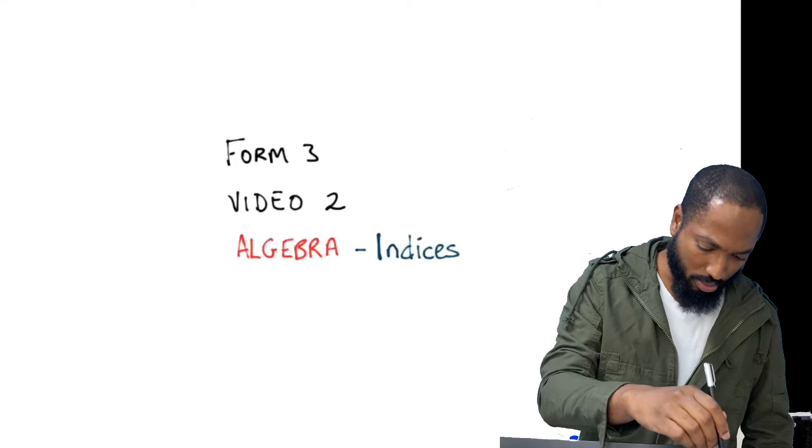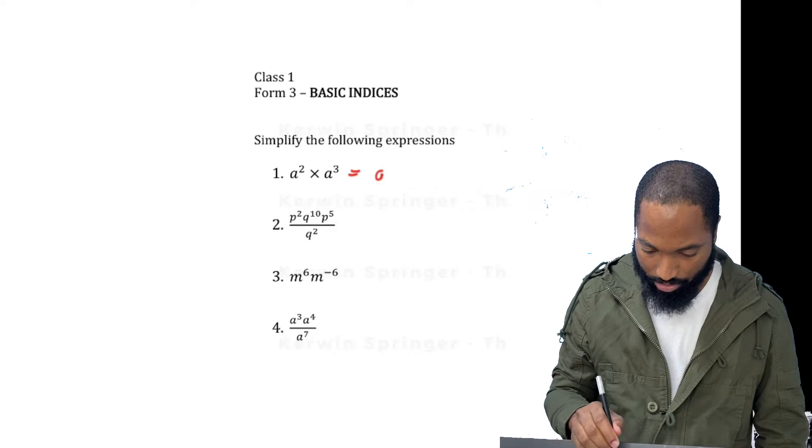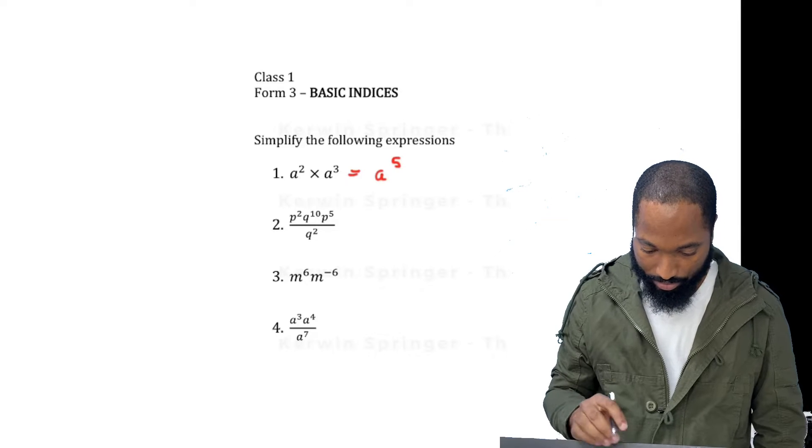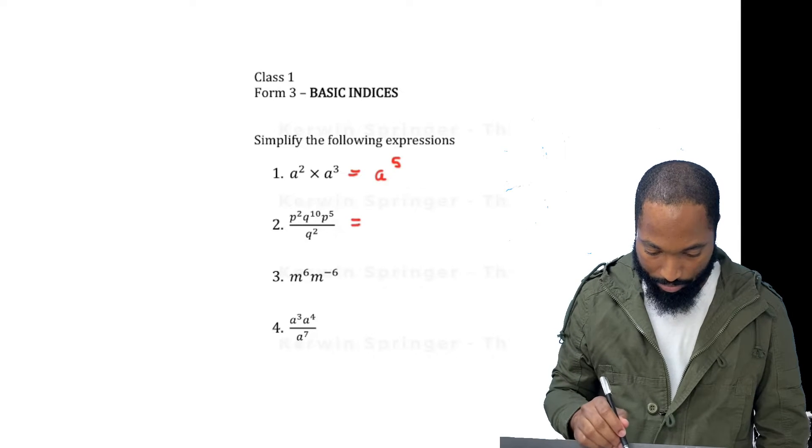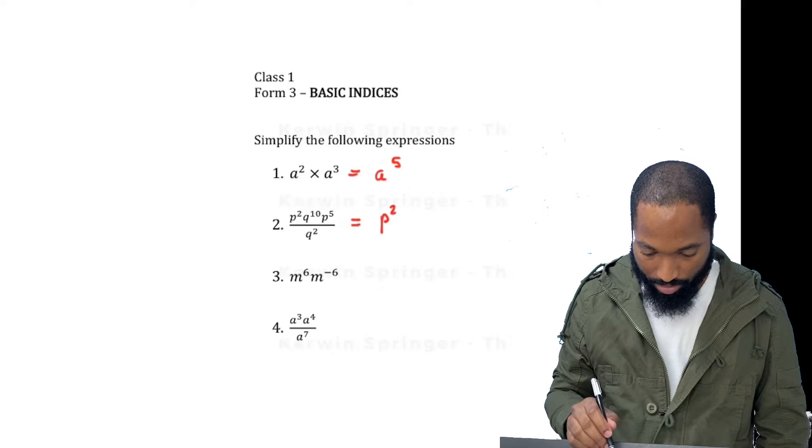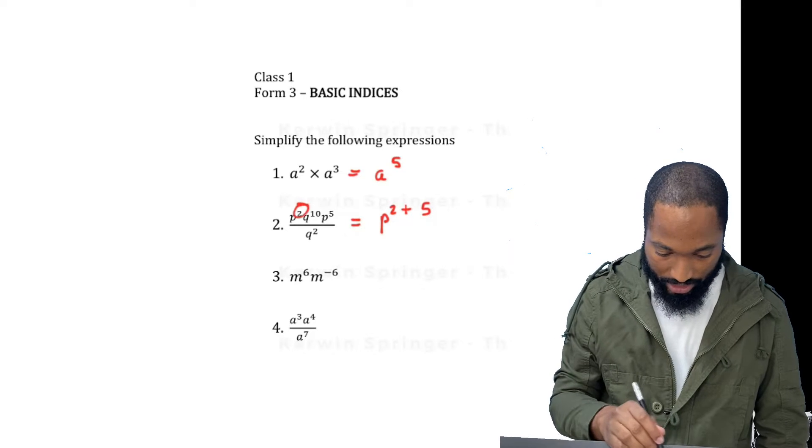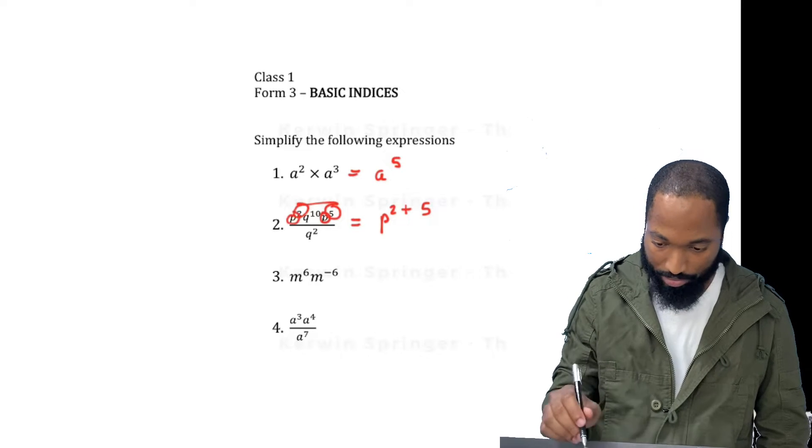By the way, we have homework from last class. Let me just do them homework first. So this is 8 to the power of 5 because they're adding up. We'll do this piece by piece. P squared plus the 5.